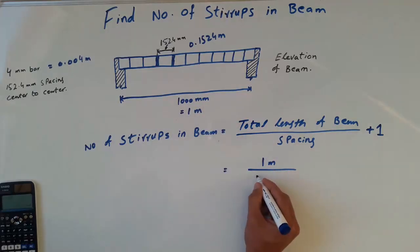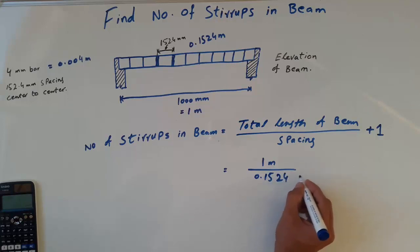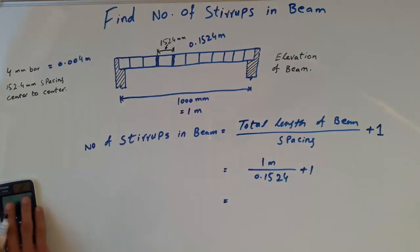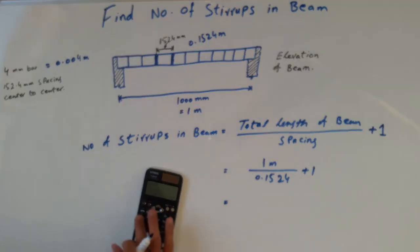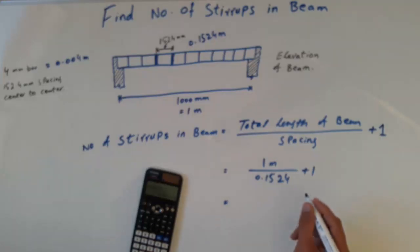The spacing is 0.1524 meters. So we calculate: 1 divided by 0.1524 plus 1. The answer we get is 7.561.